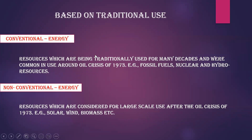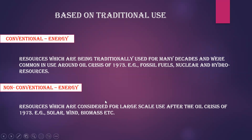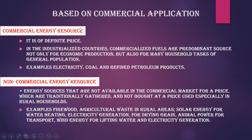Based on traditional use, energy is divided as conventional and non-conventional. After the oil crisis which happened in 1978, fossil fuels, nuclear, and hydro resources came under conventional energy, which was traditionally used. Non-conventional energy is not used traditionally but is used for large-scale purposes — like solar, wind, and biomass — spread throughout different countries.